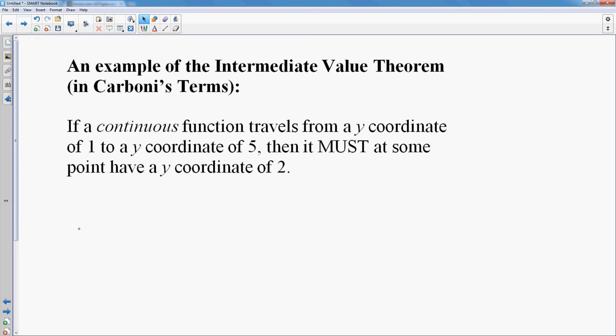The intermediate value theorem, I'm going to give you my explanation of what it is, and then I'm going to give you the true math definition. But an example of the intermediate value theorem: if you have a continuous function, and continuous is extremely important with the intermediate value theorem. The function must be continuous in order for the intermediate value theorem to apply. So if you have a continuous function that travels from a y-coordinate of 1 to a y-coordinate of 5, then you know it must at some point hit a y-coordinate of 2. Or it must also hit 3 and 4. It's got to hit everything between 1 and 5, and that is what your intermediate value theorem says.